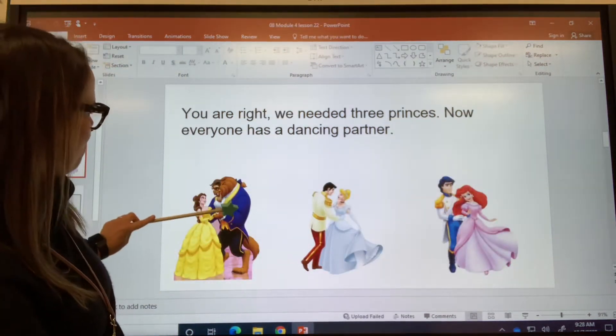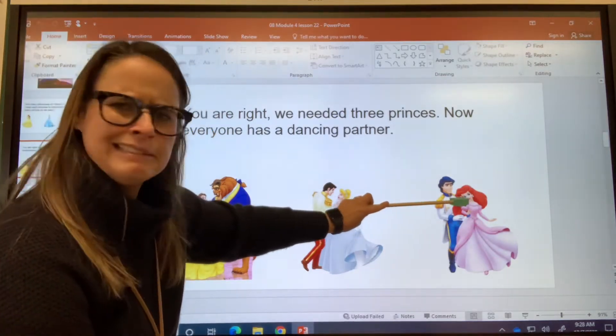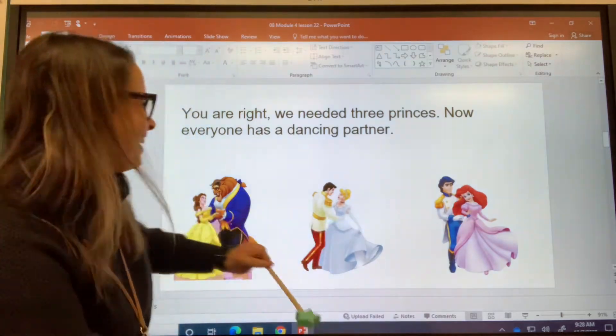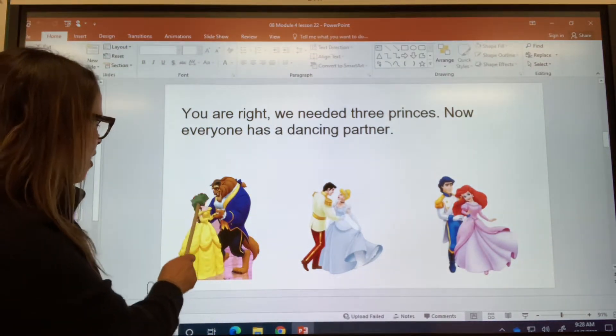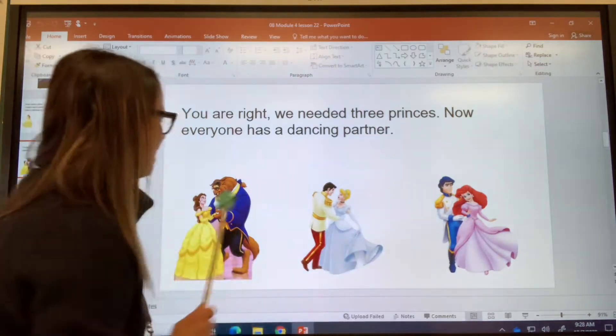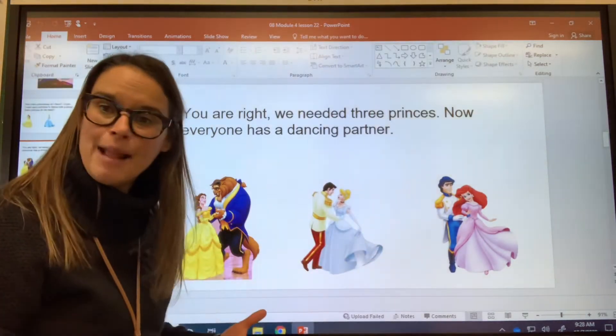Look, now we got Belle and the Beast and Cinderella and Prince Charming and Ariel and Eric. Each one has a partner now, right? Let's count how many girls there are. One, two, three. And let's count how many boys there are. One, two, three. They're the same. They're equal, right?